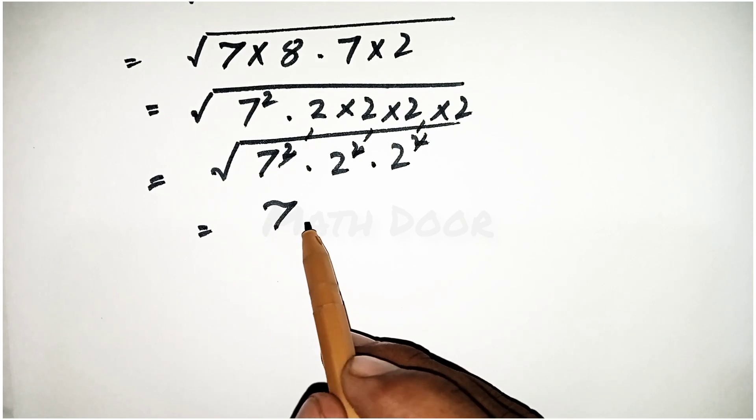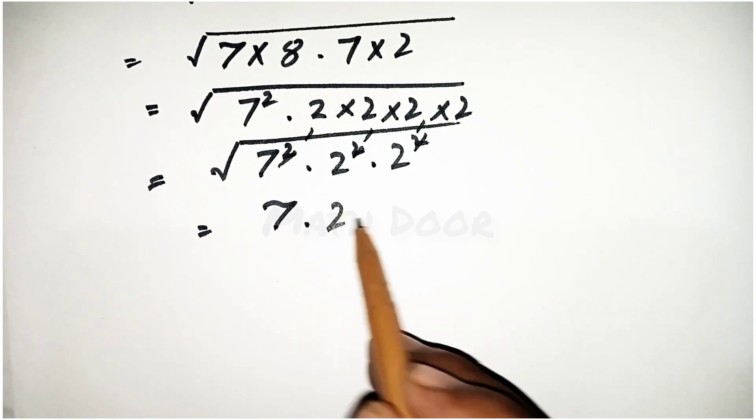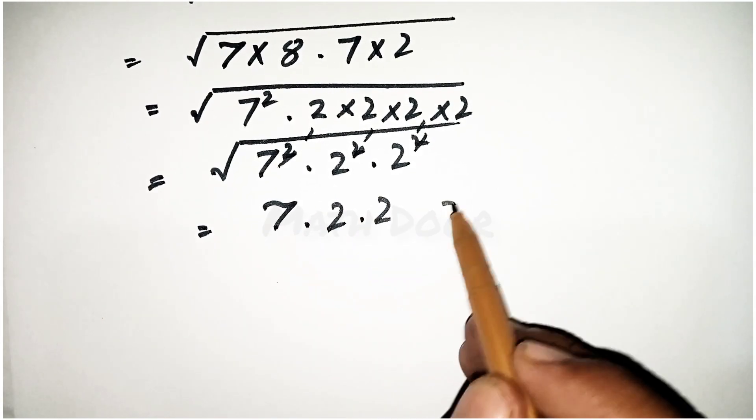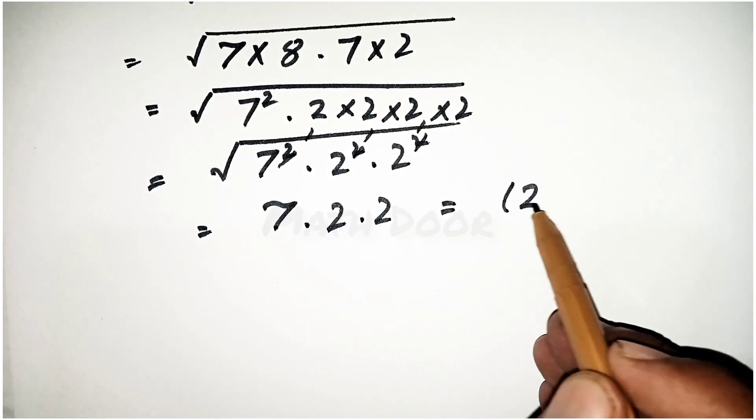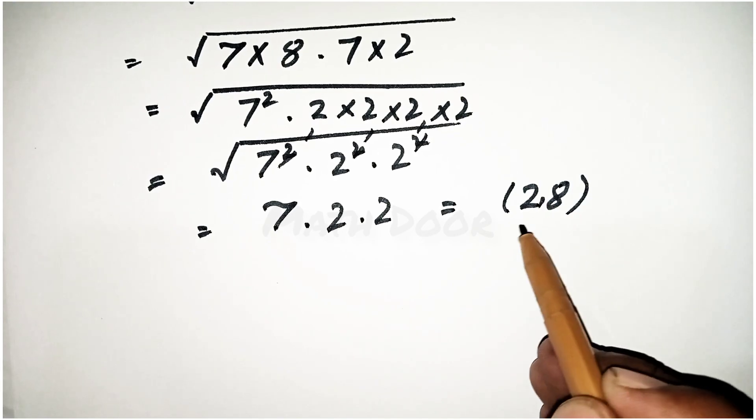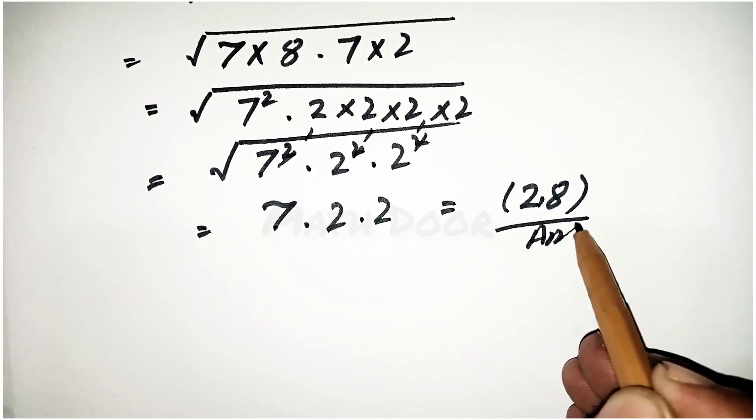Our next step is 7 · 2 · 2. When we multiply these three values, we get 28. This is our final answer.